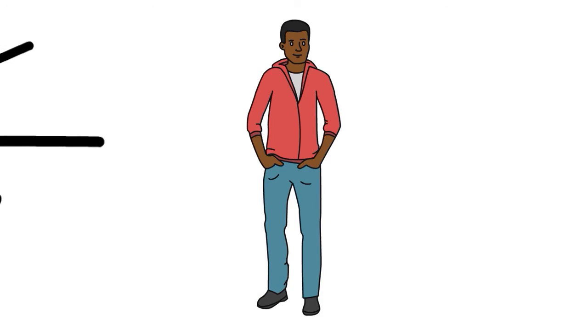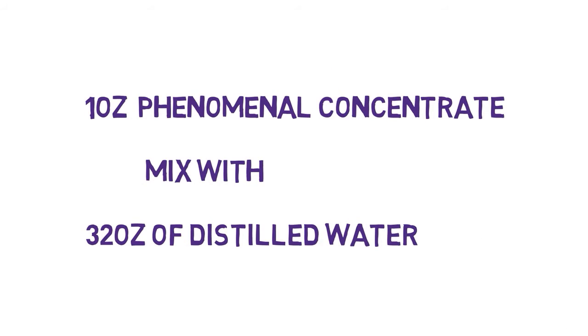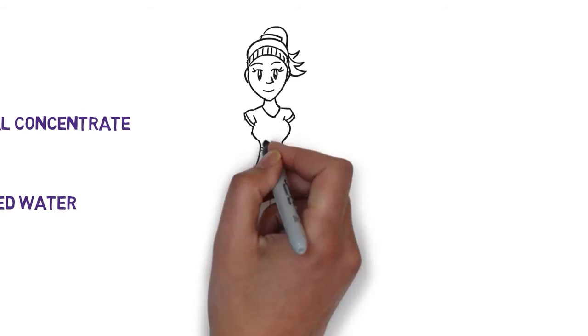Here's how it will work for you. You mix one ounce of the concentrated water with 32 ounces of your regular distilled water and drink it down.